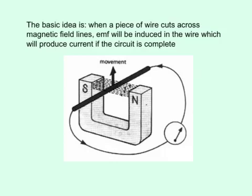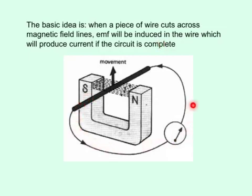The basic idea is: when a piece of wire cuts across magnetic field lines — these are magnetic field lines going north or south — then EMF, or voltage, will be induced or produced in the wire, which will produce current if the circuit is complete. The circuit is complete, therefore current will be flowing.